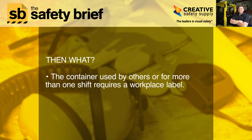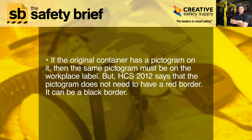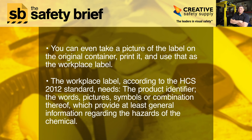This container — used by others or for more than one shift — requires a workplace label. If the original container has a pictogram on it, then the same pictogram must be on the workplace label. But HCS 2012 says that pictogram does not need to have a red border; it can be a black border. You can even take a picture of the label on the original container, print it, and use that as the workplace label.